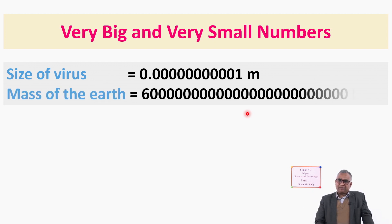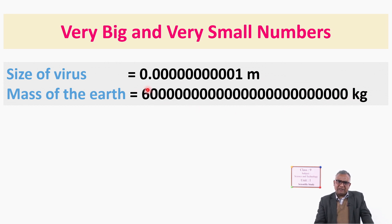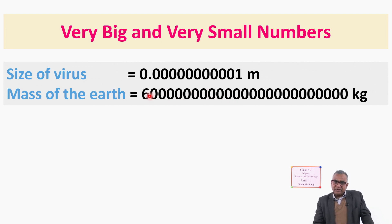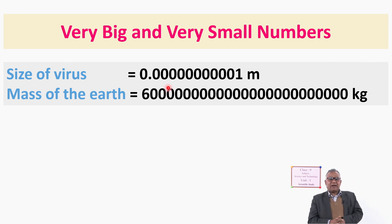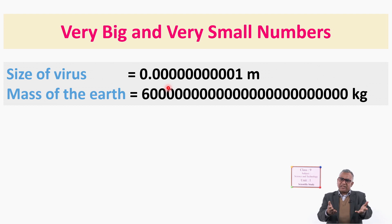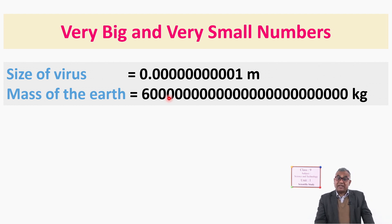Now look here — it is the mass of the Earth. So many zeros! If you count, there are 24 zeros. So it is also very difficult to read and write. It takes a long time to write and more space. Writing very big and very small numbers in this way is very difficult. That is why we have to use scientific notation.